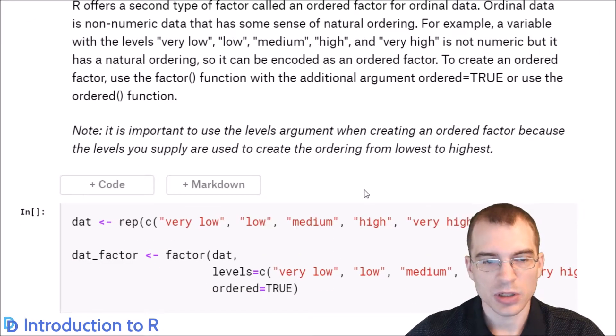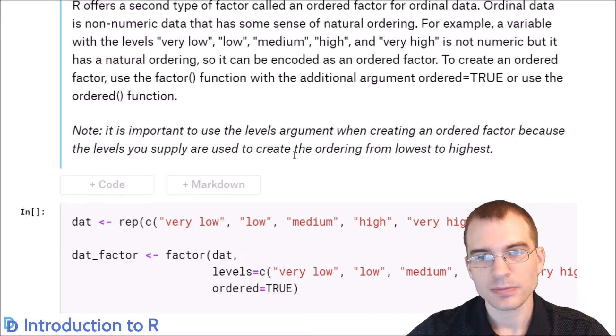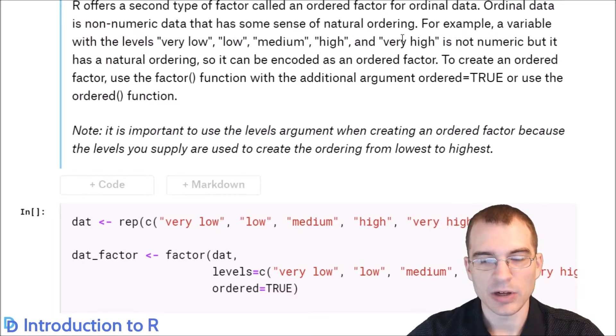R also offers a second factor data type called the ordered factor for ordinal data. Ordinal data is non-numeric data that actually has some sense of ordering from like low to high is an easy example. So for instance, if you had a questionnaire with categories ranging from very low, low, medium, high, very high, that would be considered an ordinal categorical variable because low is below medium, high, and very high. So there's some sense of scale or ordering to it.